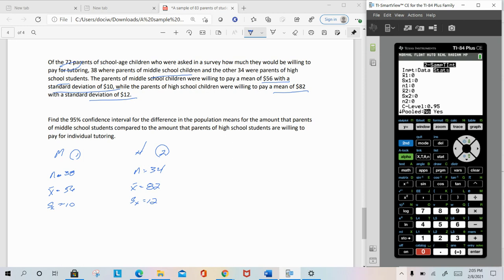We've got the stats, so once again, X̄1 is 56, and S1 is 10, and n1 is 38, so that's group 1. Group 2, the parents of high school children, X̄2 is $82 an hour, SX2 is 12, and n2 is 34. It says here that we want to find a 95% confidence interval.